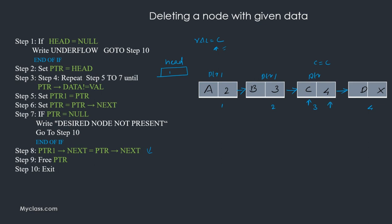When ptr data equals c, we exit the loop — ptr is now pointing to the node with data c, and ptr1 is the previous node. To delete it, we set ptr1 next equal to ptr next, bypassing the node with c. We then free ptr and exit the algorithm. This covers all the deletion algorithms for a singly linked list. Thank you.